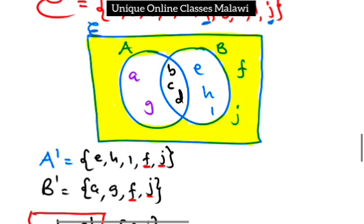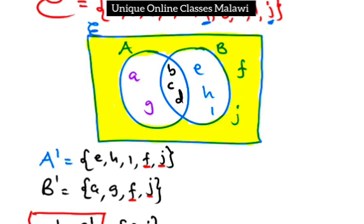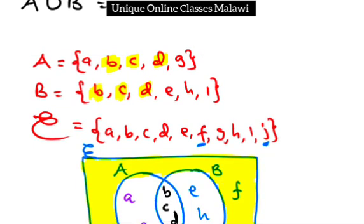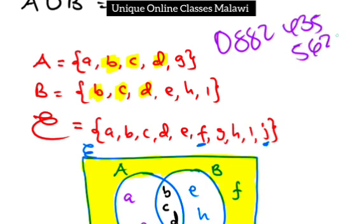So A complement and B complement — that's what we do. You can be practicing that on your own. I think we should meet in the next video. If you have enjoyed the video, please subscribe to my channel as well as liking my Facebook page, Unique Online Classes Malawi. If you have questions in any subject, my number is 0882 435 562. Thanks for watching and I wish you all the best.